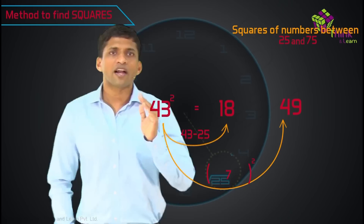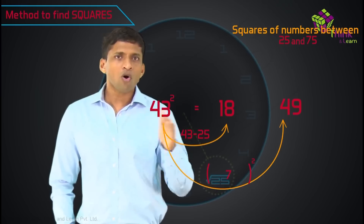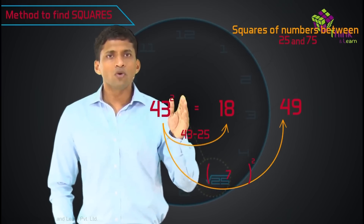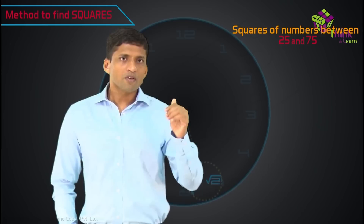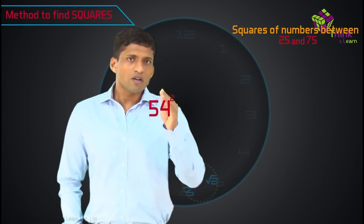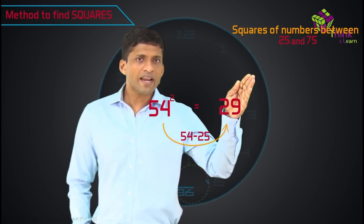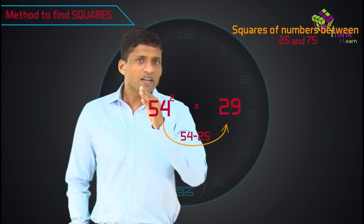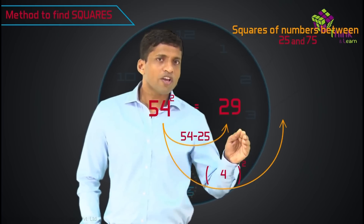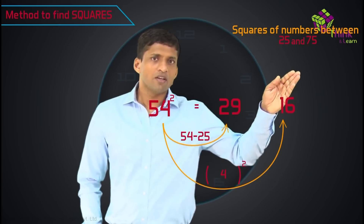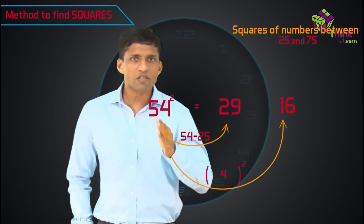This is the easiest method for writing down squares. By understanding this method, you can know all squares of numbers up to 75. One more example: to find 54 square, take the difference from 25 — 54 minus 25 gives 29 as the first two digits. Then take the difference from 50 — 54 minus 50 is 4. Square of that is 16, written as the last two digits. So 54 square is 2916. Very simple.